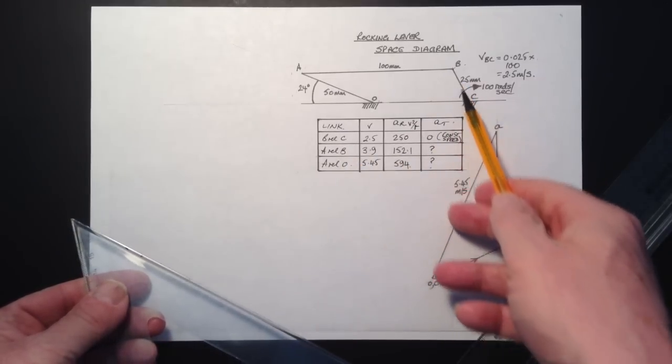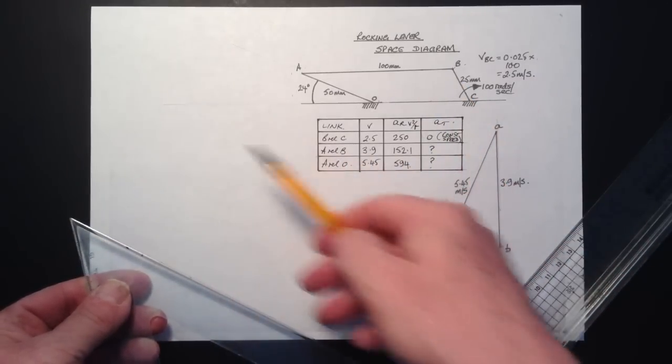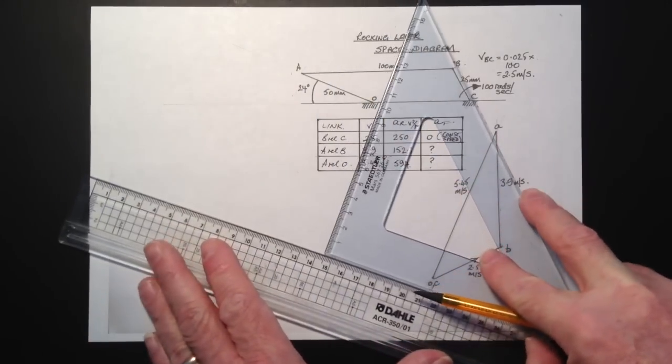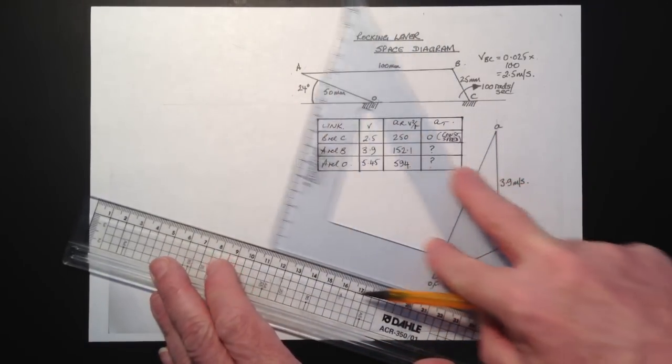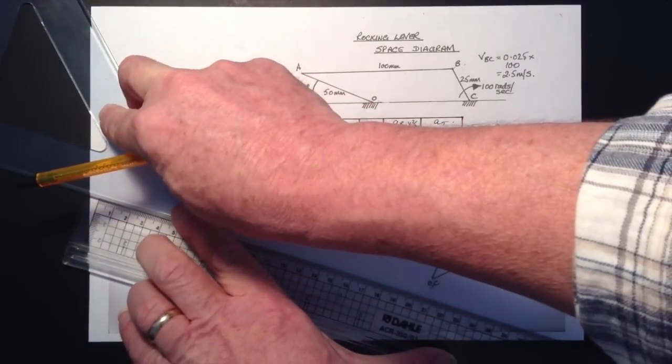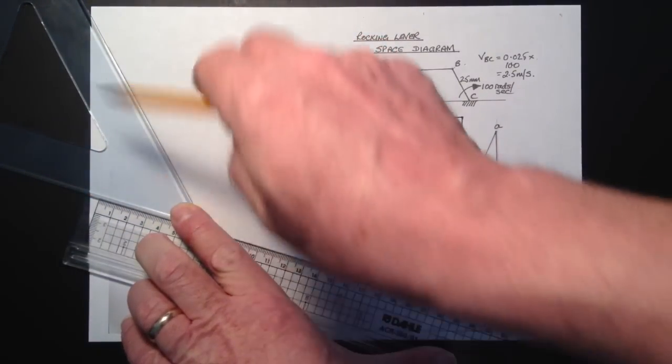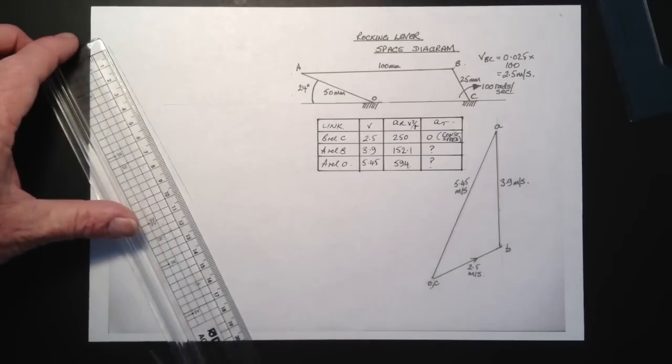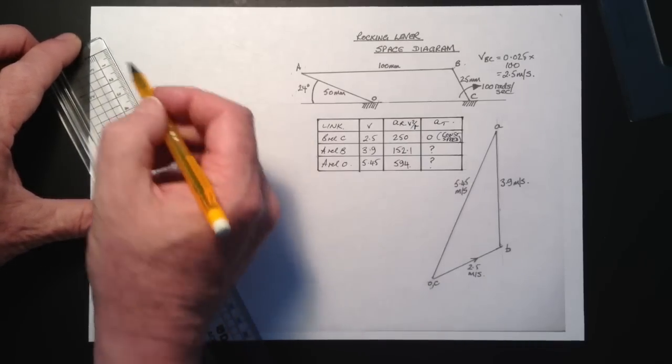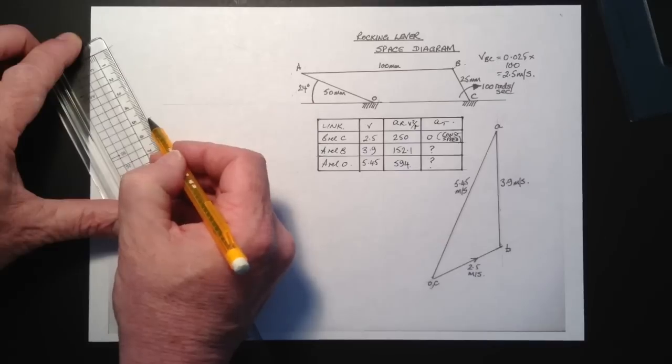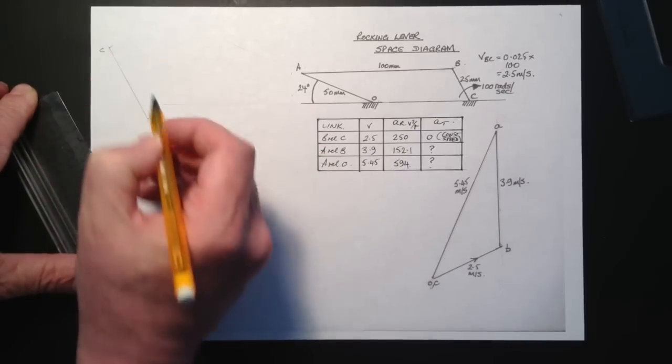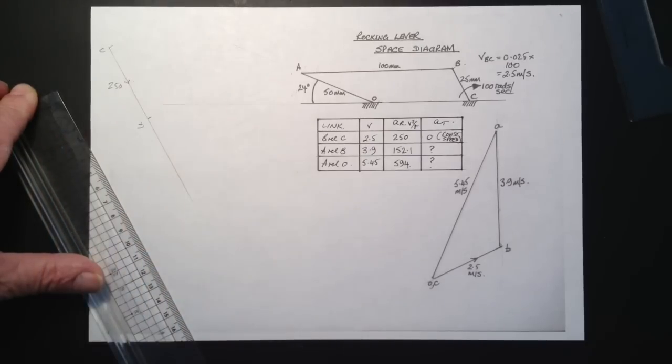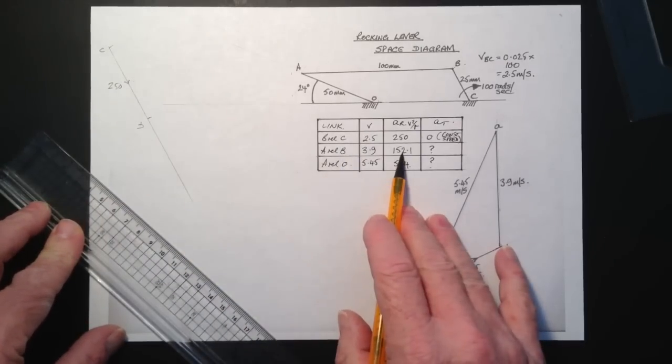Now let's start to construct our acceleration diagram. So the first known is B relative to C and it's obviously going to be from B to C. It's towards the centre of rotation. So we draw a parallel line. Now I've an idea where this diagram is going to lead me so I'm going to put my parallel line in up top left. And we scale it. We've already worked out the radial component so we can choose a suitable scale and put that vector into our diagram. And there we go. Remember it's from C to B. It's acceleration of B relative to C but from C to B.